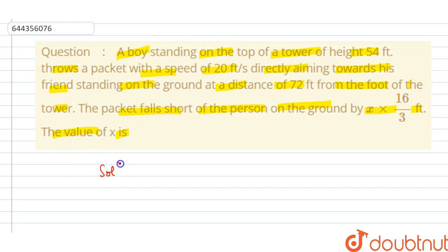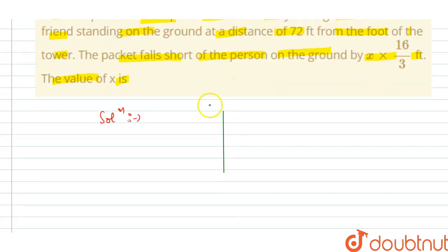In the solution, let us draw a free body diagram. Suppose this is the level where the boy is standing and throws a packet with 20 feet per second speed.